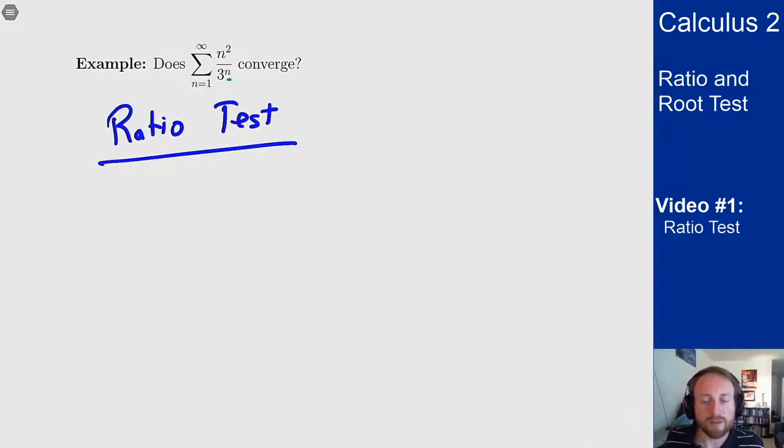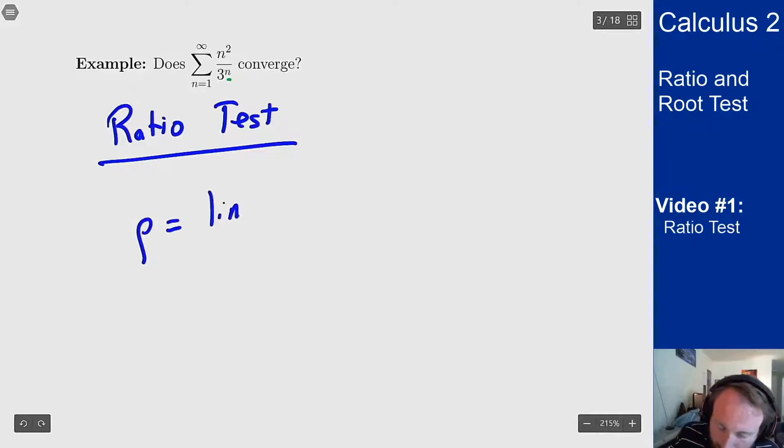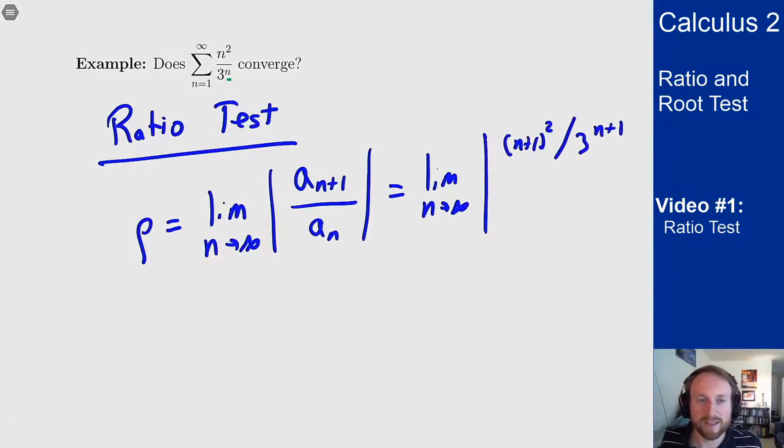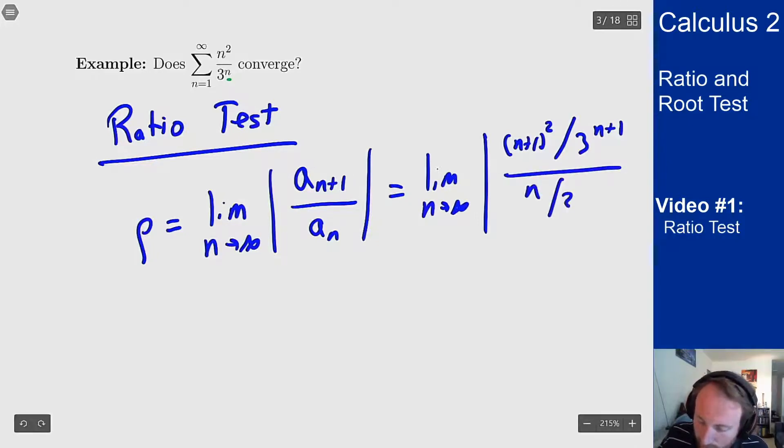How do we use the ratio test? We compute the limit in the ratio test and see what I get. So the limit I want is rho equal to the limit as n goes to infinity of a_{n+1}, the n plus first term in the series divided by a_n. I can plug in what these terms are. So a_{n+1} is (n+1)² over 3^{n+1} where I'm just plugging in n+1 wherever I see n in the series divided by n² over 3^n.